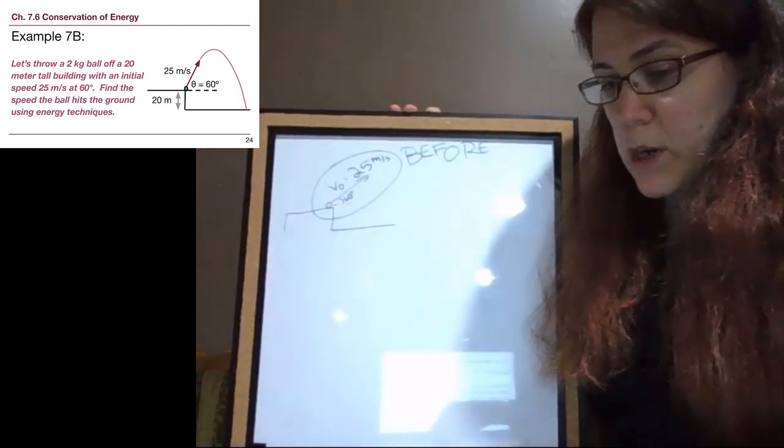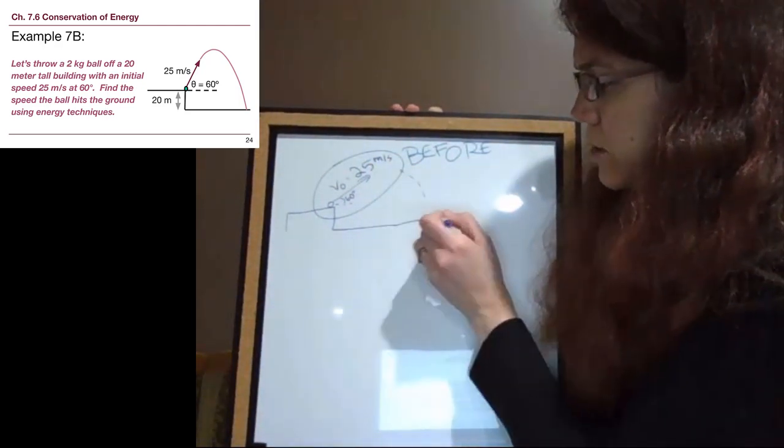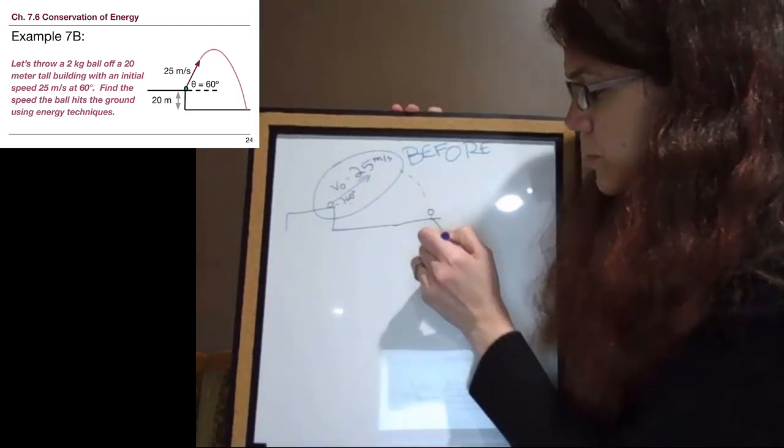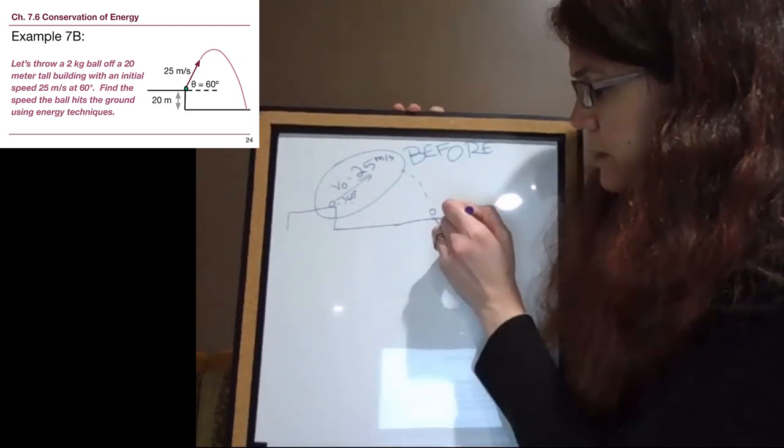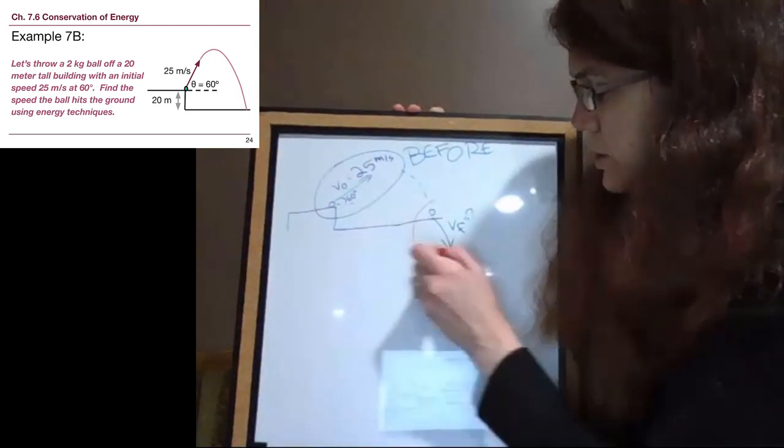Because at the end of the problem, when the ball has come back down again and hit the ground, it is moving with a different final speed that we don't know about. But that will be our after situation.